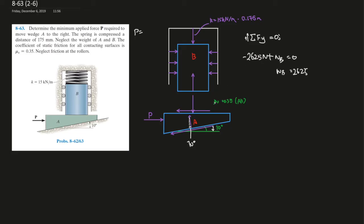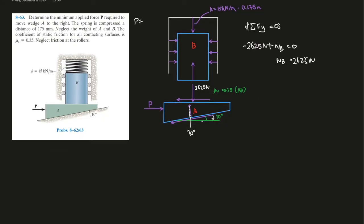And now we look at the second object over here. So this force definitely equals to this force. It's just equally an opposite, Newton's third law. So 2,625 newtons over here. And let's use sum of the forces at y again, because that's the force that we got.